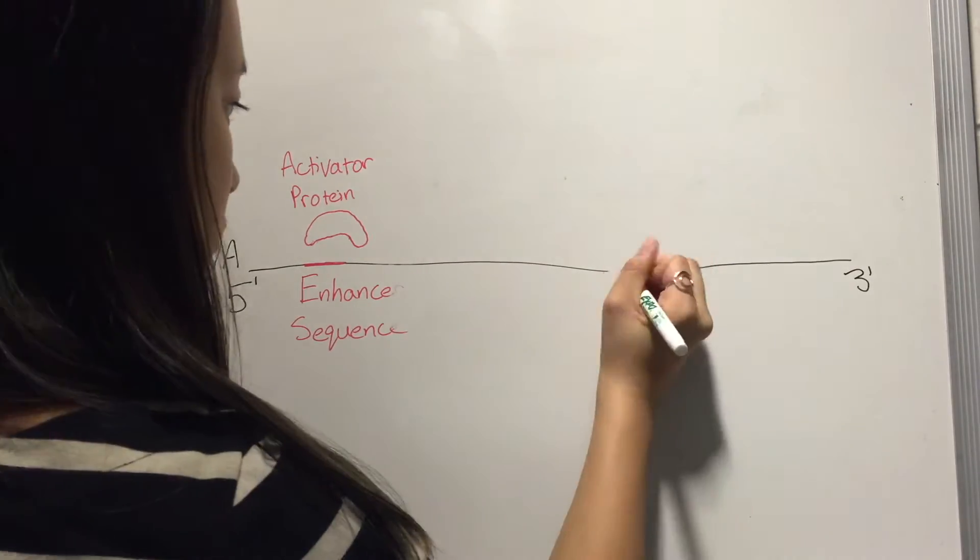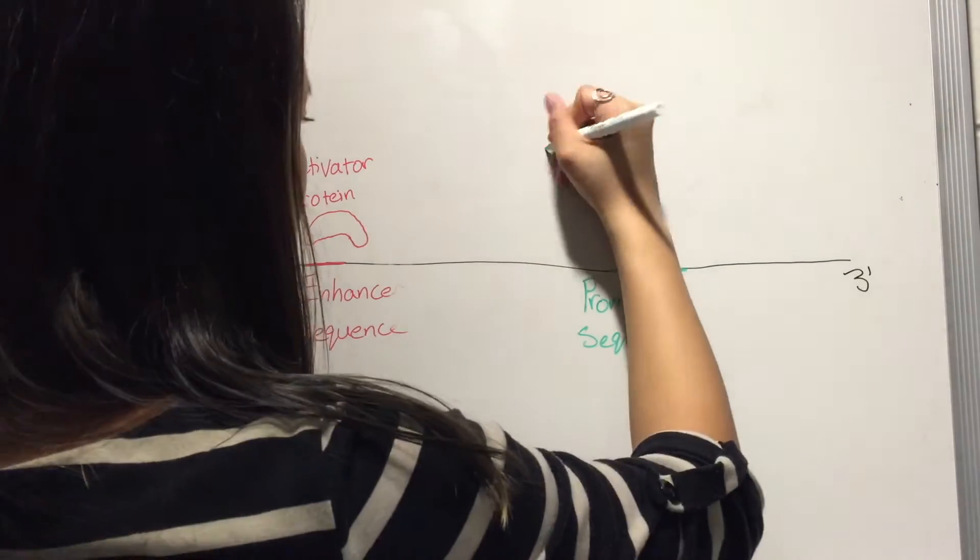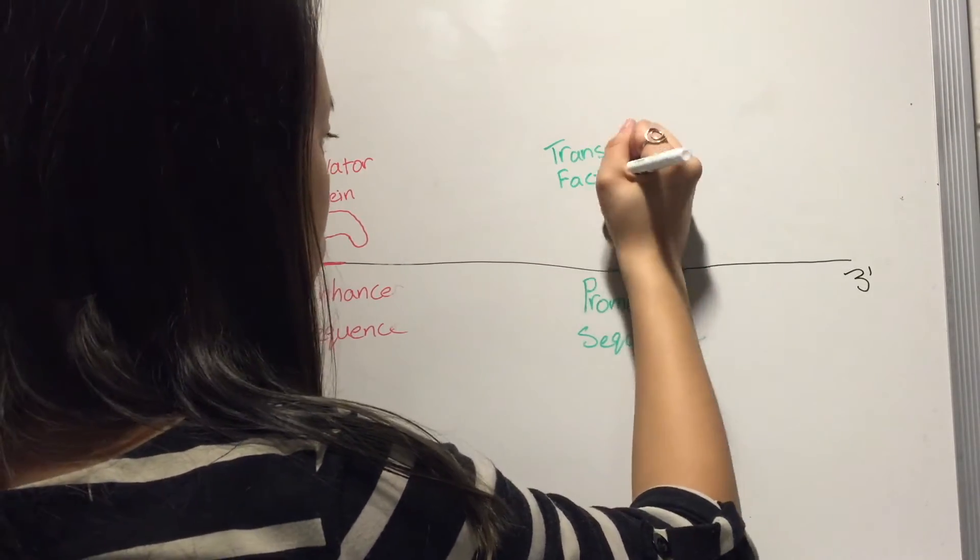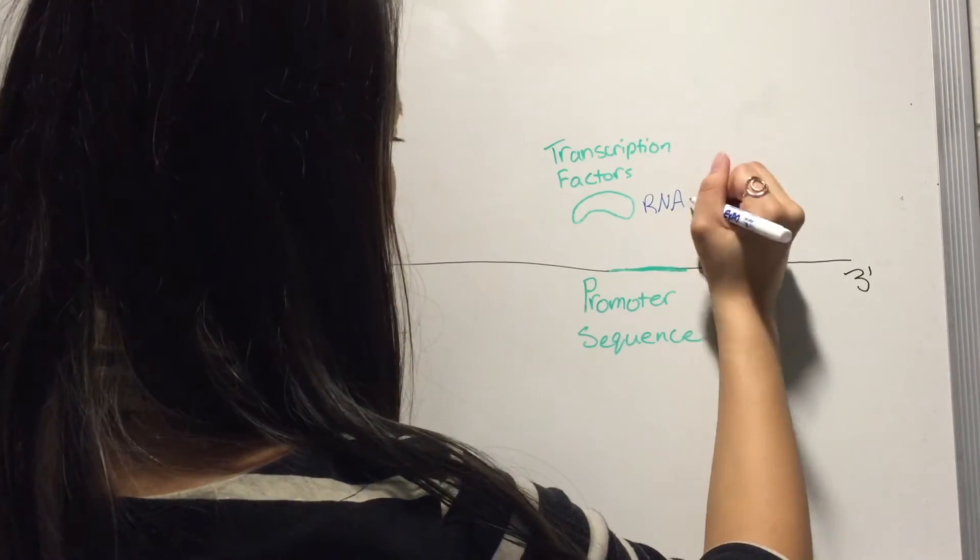In this example, the enhancer is upstream of the core promoter. The basal transcription machinery and RNA polymerase bind to the core promoter.